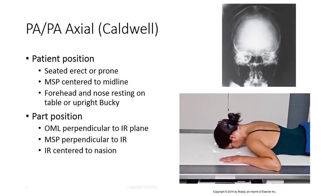The PA and PA Axial Caldwell methods are very similar, except the PA Axial Caldwell has a tube angulation while the straight PA has a perpendicular beam. The part positions are identical, and the images on the right on this slide include the PA view only. The patient can be upright or prone with the MSP centered to midline of the IR. Placing the forehead and nose against the table or upright bucky generally places the OML perpendicular to the IR; small adjustments may be needed depending on the patient. The central ray should be perpendicular to the IR and exit the nasion for the PA view.